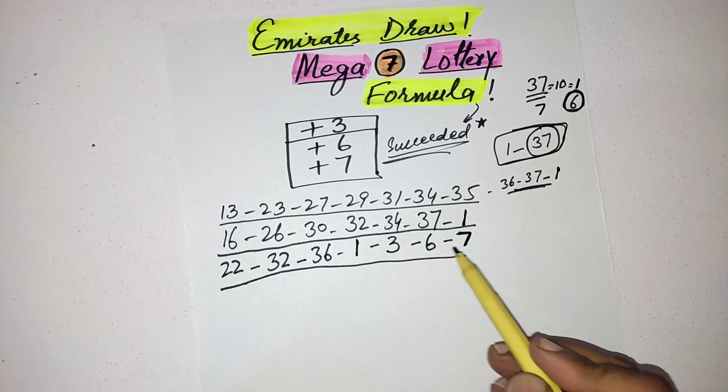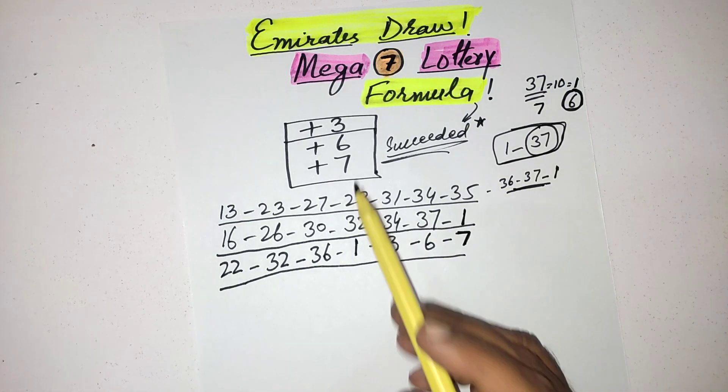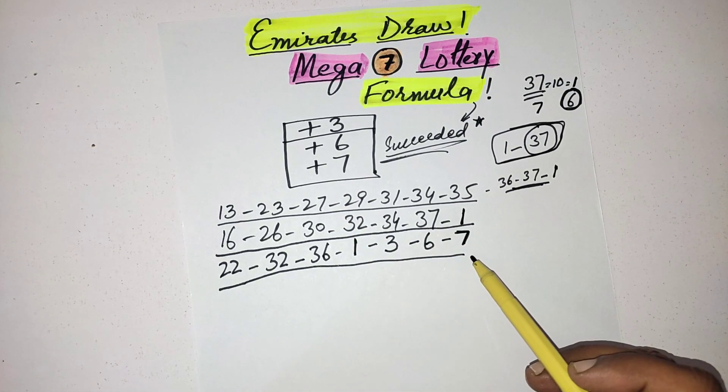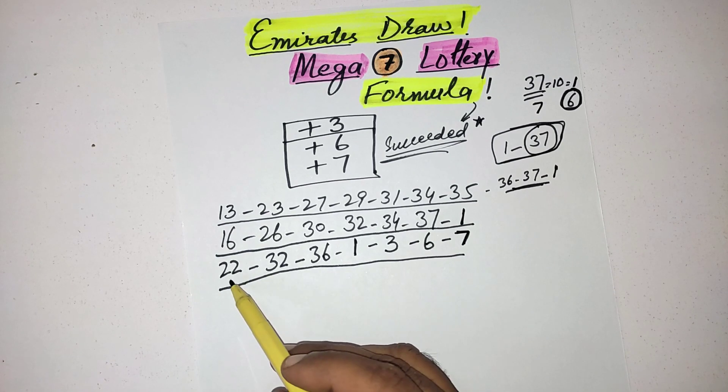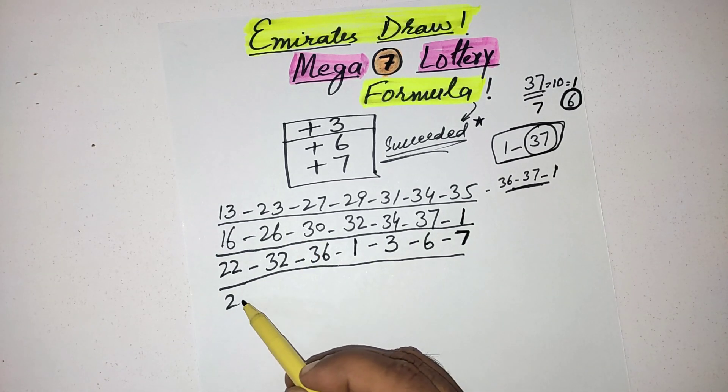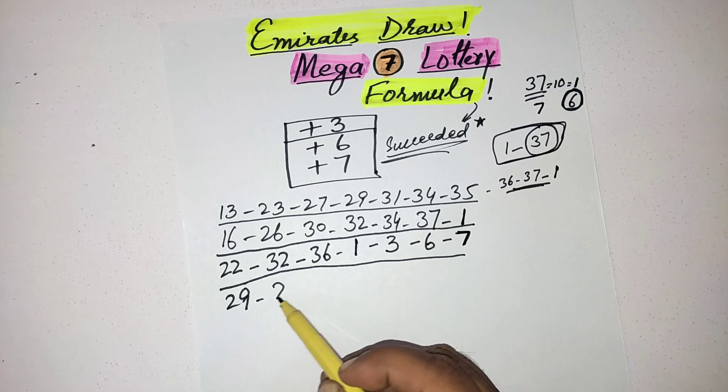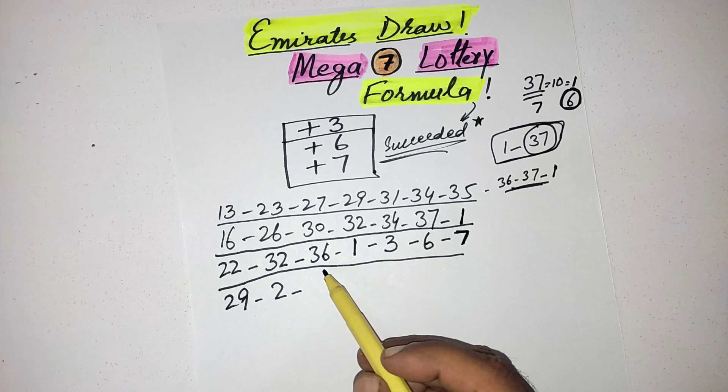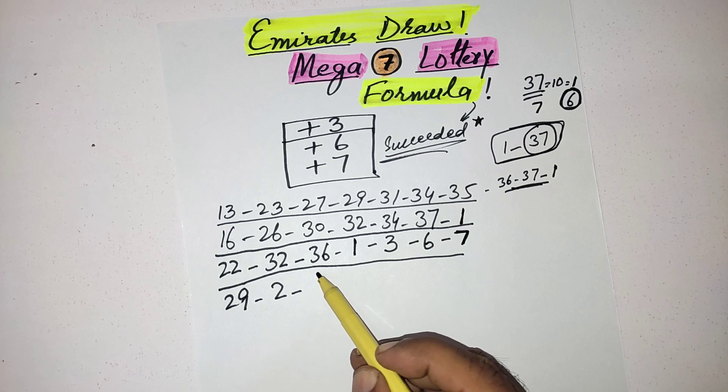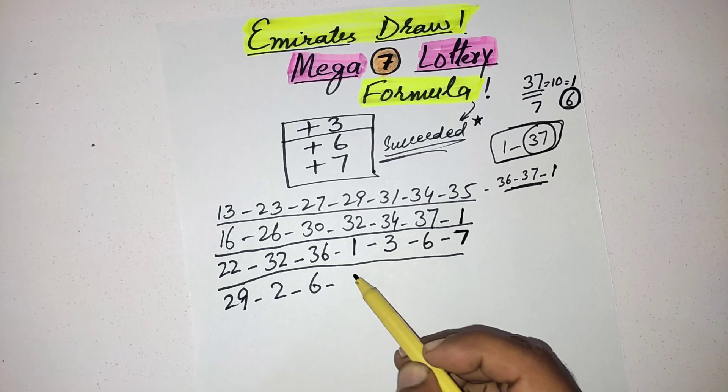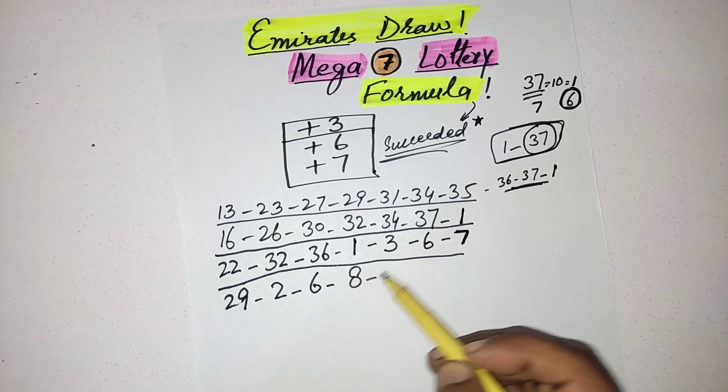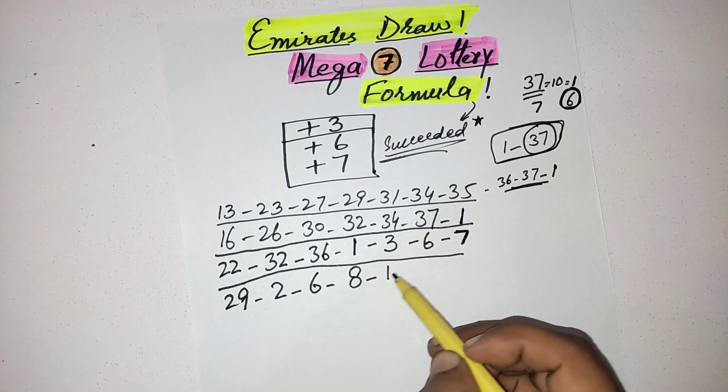Then again repeat this plus 7 number with these numbers. 22 plus 7 answer is 29, 32 plus 7 answer is 2, 36 plus 7 answer is 6.